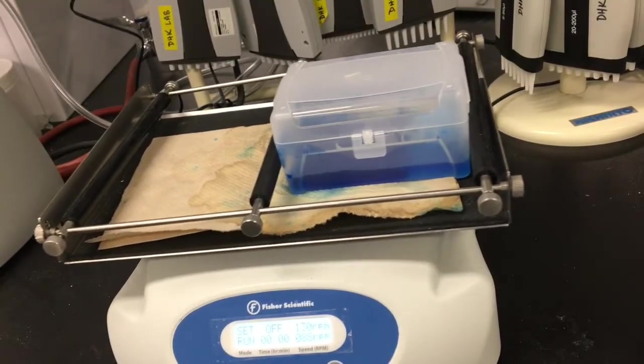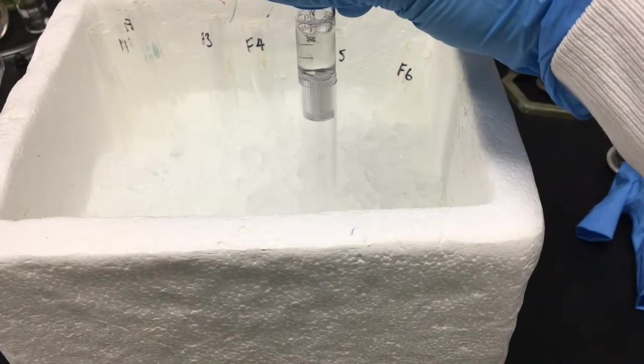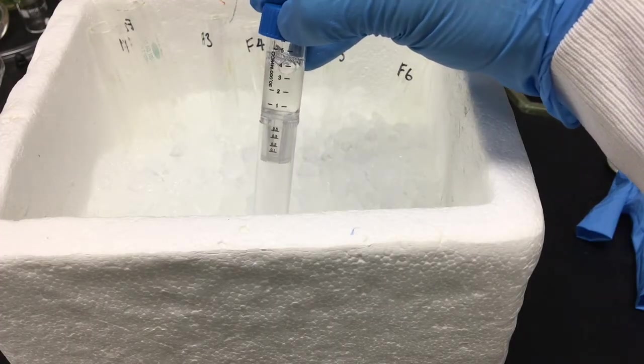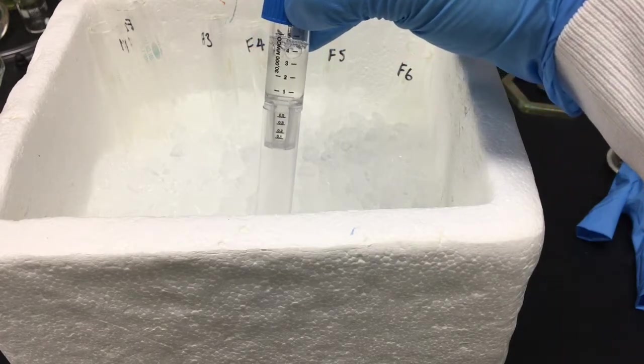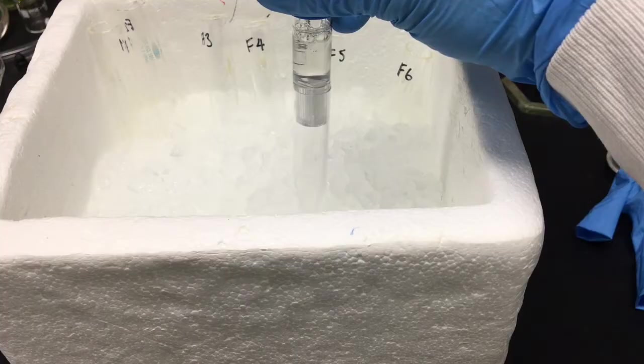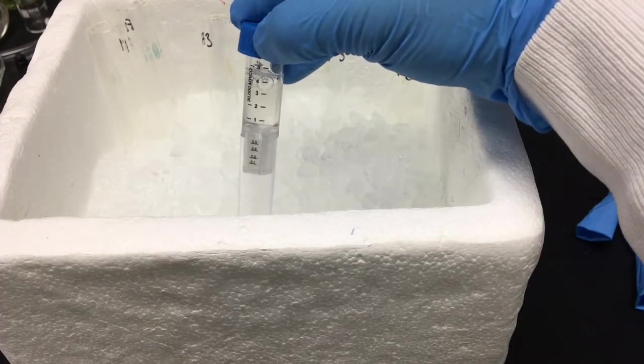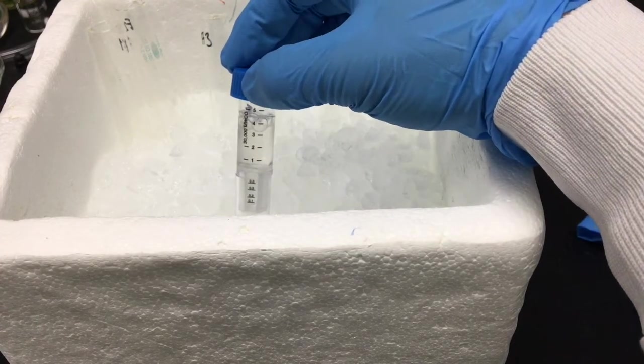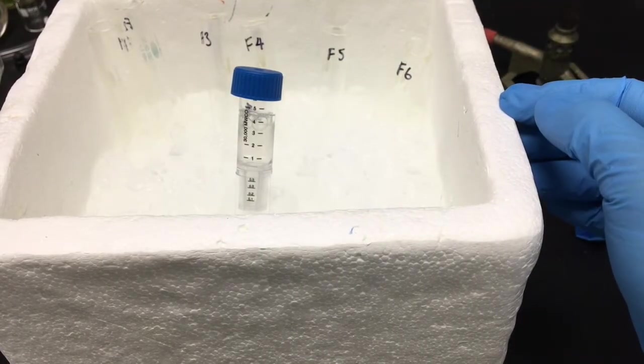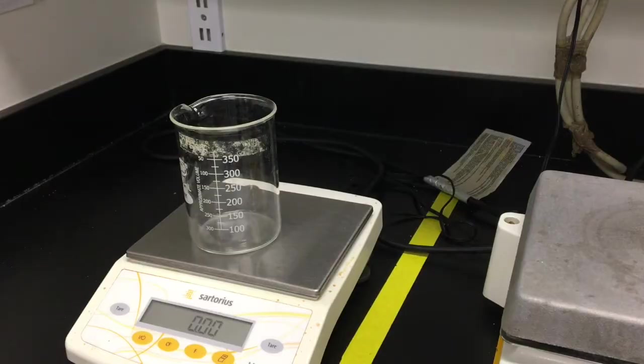After destaining, you can check which fractions contain your pure protein and then pool them. You can then concentrate the pooled protein solution prior to carrying out buffer exchange, since the elution buffer may not be optimal for the storage or activity of your protein. I'm using a centrifugal filter with a molecular cutoff of 30 kilodaltons to concentrate my protein. Proteins above this size remain above the filter, but the buffer can pass through when the filter is centrifuged. You can balance the centrifugal filter with a falcon tube filled with water.